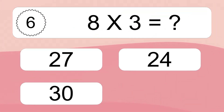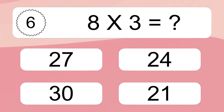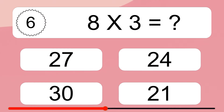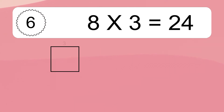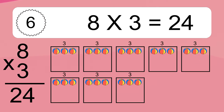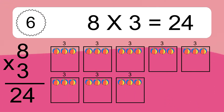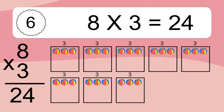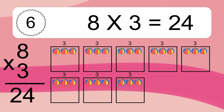8 times 3 equals what? 8 times 3 equals 24. We have 8 boxes, and each box has 3 colorful balls inside. If you count all the balls in all the boxes together, you will have 8 times 3 balls. This equals 24 balls.